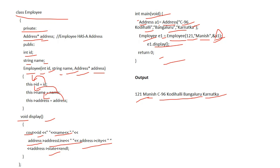The Address class is defined separately and can be used by multiple classes like Employee and Student. Both share the common Address class, making the code reusable. Instead of rewriting the address code in every class — Employee, Student, Teacher — we use aggregation.